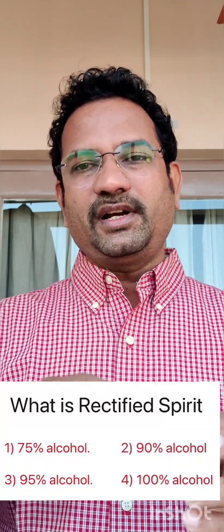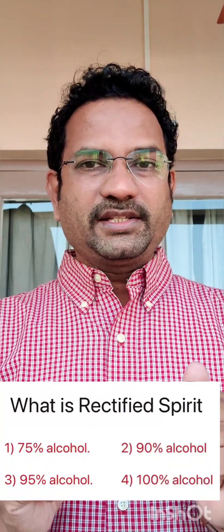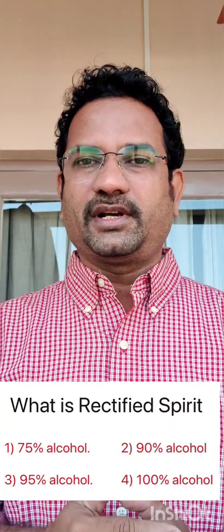Rectified spirit contains 95% alcohol and 5% water, so the answer for rectified spirit is 95% alcohol — Option C. Then what is absolute alcohol? Absolute means 100%. If you get 100% alcohol it is called absolute alcohol. To break that azeotropic mixture, there is a process called azeotropic distillation. By adding benzene you can break that mixture and obtain only alcohol — 100% alcohol — which is called absolute alcohol.